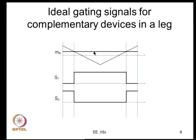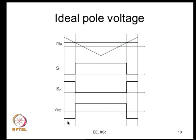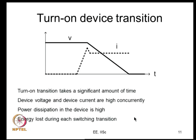In one carrier cycle: the modulation signal for R phase is compared, producing the top device signal and its complement for the bottom. Ideally these are perfectly complementary. But devices are not ideal - with a practical device, your gating signal goes high, after which current starts rising and voltage starts falling. There is a certain transition time, and dead time must be much longer than this.